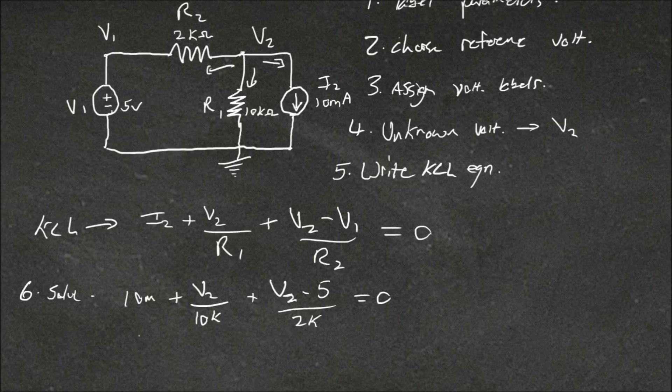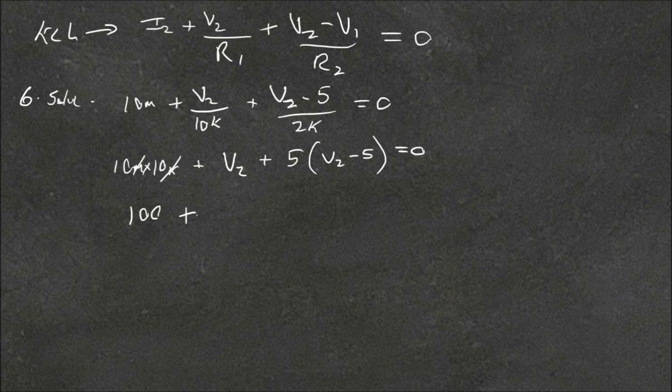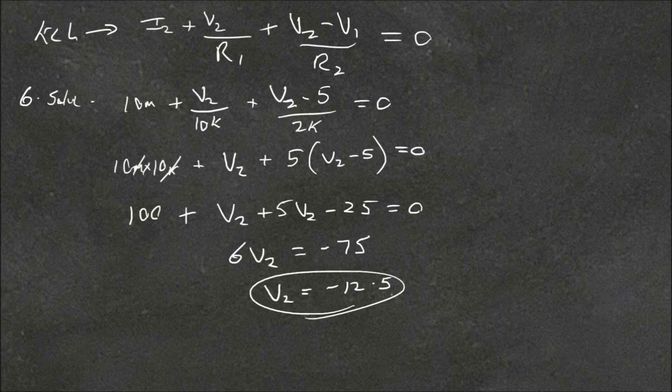So we have a common denominator of 10k. So we'd have 10m times by 10k. Essentially the k and m cancel. Plus V2 plus V2. Plus 10k divided by 2k, so that'll just be a 5 out the front. V2 minus 5 equals 0. So this is 100 plus V2 plus 5V2 minus 25 equals 0, which is 6V2 equals minus 75, or V2 equals minus 12.5. And so that's our answer for the voltage, and the unit is volts.